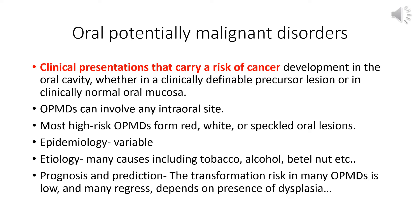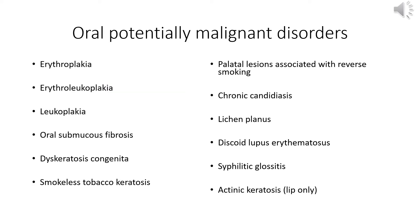Transformation risk in many OPMDs is low. For leukoplakia, globally one to two percent transformation to squamous cell carcinoma is estimated. For cases of oral epithelial dysplasia it was around 12 percent, but for leukoplakia as such it is only one to two percent. Presence of oral epithelial dysplasia in these lesions is the single most important factor in determining whether a lesion will undergo malignant transformation.